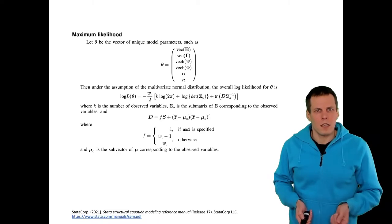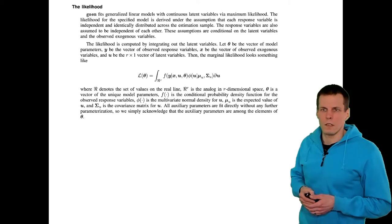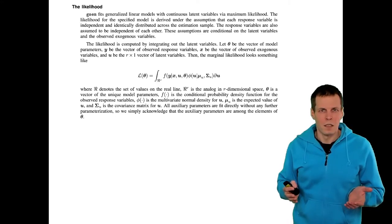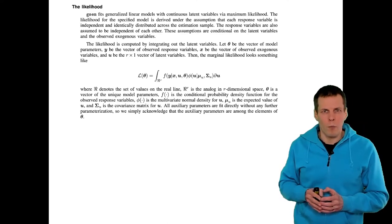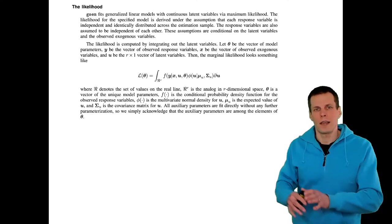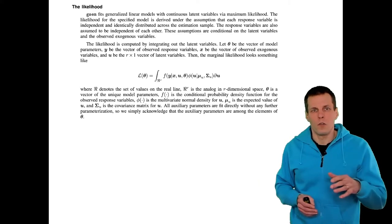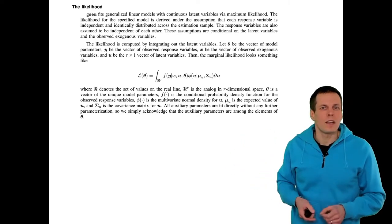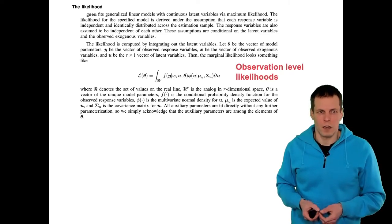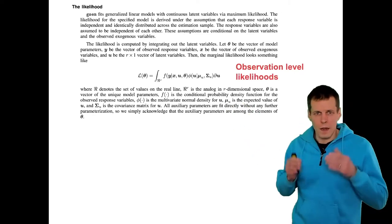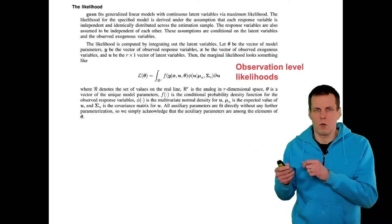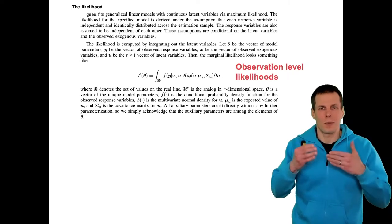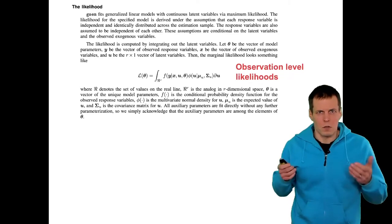When we look at the GSEM documentation for the same section, it shows something quite different. There is an integration symbol and there is no covariance matrix of the data. What we're actually doing is no longer comparing observed covariances against implied covariances, but instead we are looking at observation-level likelihoods — calculating the likelihood of each observation or cluster of observations.